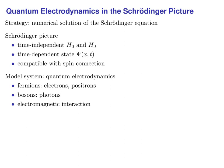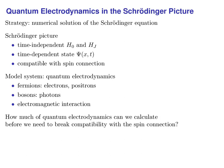Our model system is quantum electrodynamics, the simplest case of quantum field theory. It features one sort of fermions — the electrons — together with their antiparticles, the positrons, and one sort of bosons, the photons. These particles interact via just one type of interaction: the electromagnetic interaction. Let's do some numerical calculations in this system and find out how far we can get before it becomes necessary to break compatibility with the spin connection.